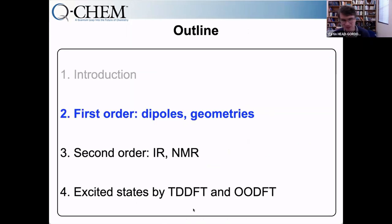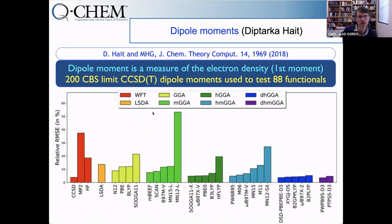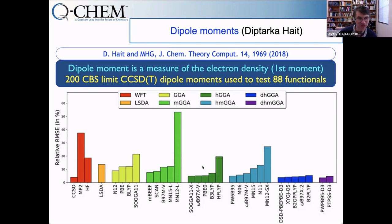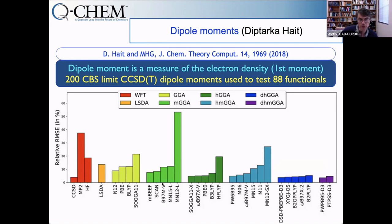But enough of the math — let's get on to some chemistry. For first-order properties, the simplest is the dipole moment, essentially the first moment of the electron density and one of the simplest ways to measure the quality of an electron density. Looking at dipole moments tests whether DFT has strayed from the true path, not just for spherical atoms but for molecules. In red are some wave function methods, and density functionals are arranged by rungs on Jacob's ladder: rung 1, rung 2, rung 3, rung 4a, rung 4b.